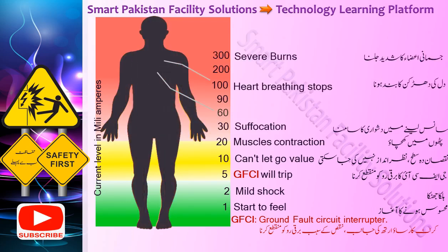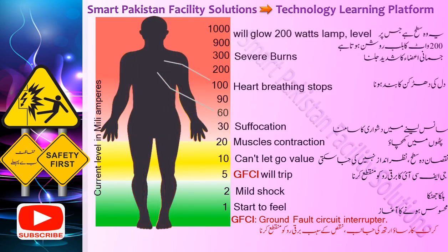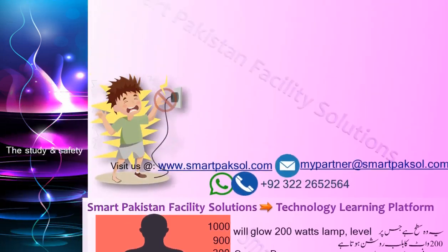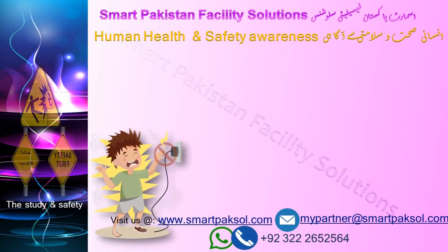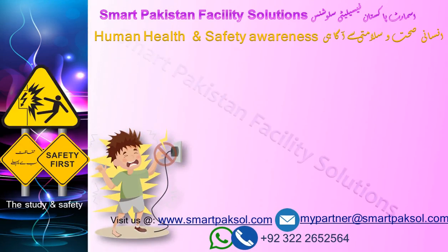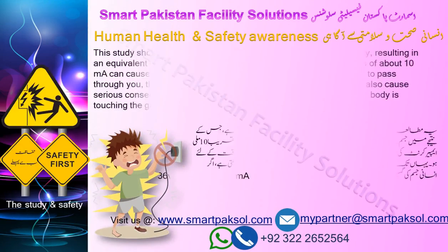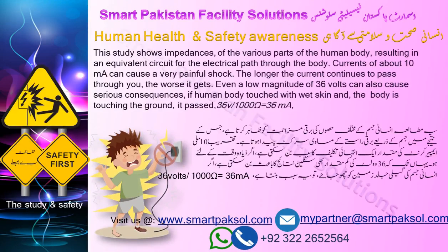The body gets severe burns. At this point, a 200-watt lamp will glow. This study shows the impedances of the various parts of the human body, resulting in an equivalent circuit for the electrical path through the body.